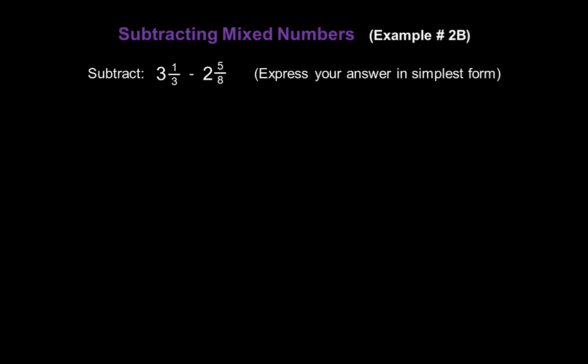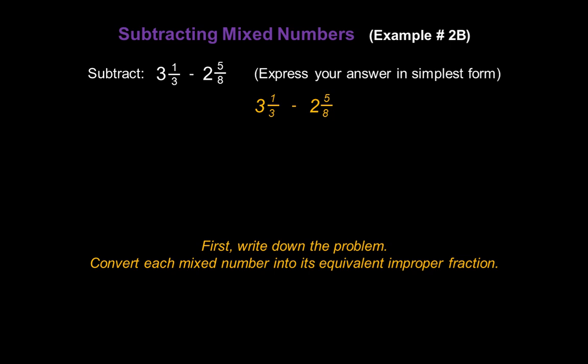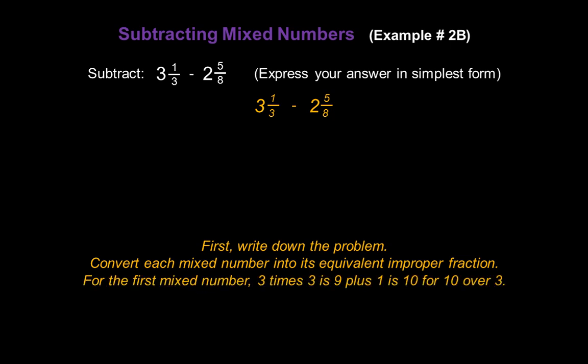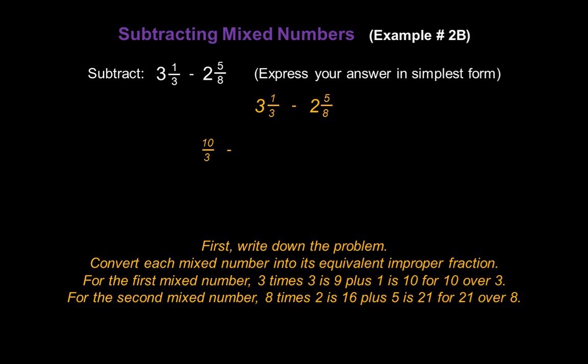Now let's subtract another problem: three and one-third minus two and five-eighths. We write down the problem: three and one-third minus two and five-eighths. Convert each mixed number into its equivalent improper fraction. For the first mixed number, three times three is nine, plus the one in the numerator is ten, so we have ten over three. For the second mixed number, eight times two is sixteen, plus the five in the numerator gives us twenty-one over eight.